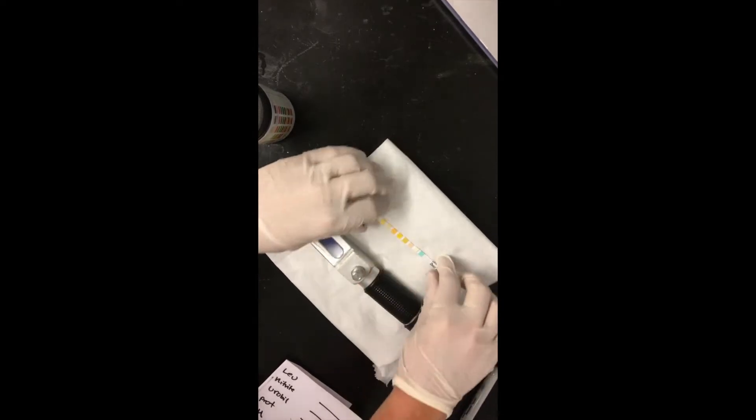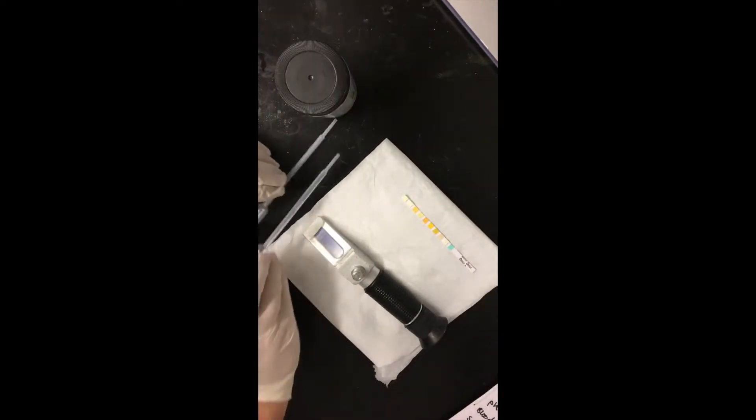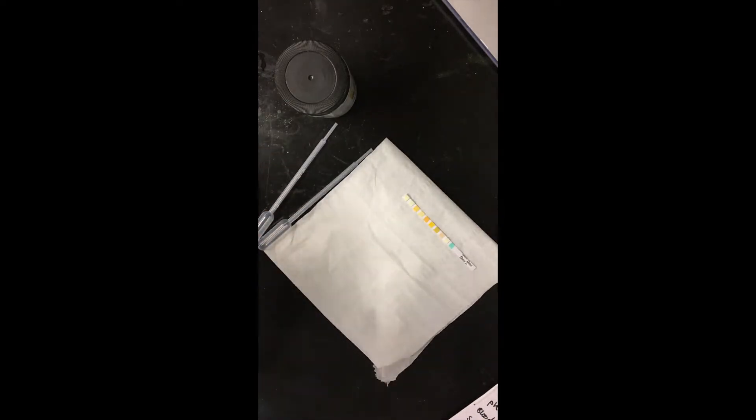This is how to prepare a refractometer so that you can carry out a urinalysis. So you need your dipstick, your refractometer, gloves, a clean place to work and a recording slip. First step,